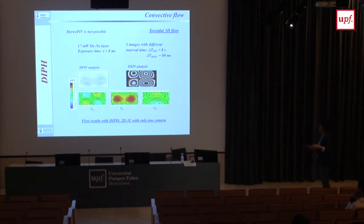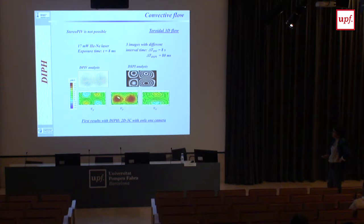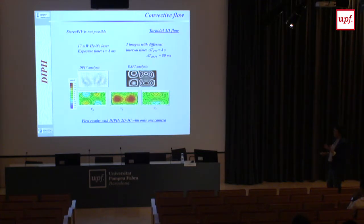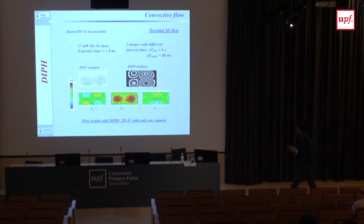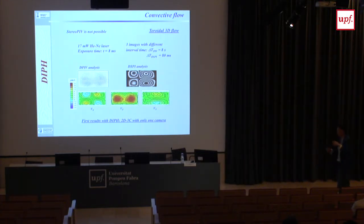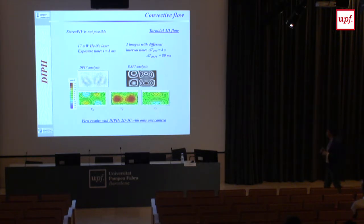This was the first time we showed that with DSPI or the image plane holography technique we could measure in-plane velocities. One component came from the phase image, and the out-of-plane velocity showed asymmetry because the sensitivity vector — the illumination direction — contributes a mixture of Vx and Vy components. This asymmetry is due to the out-of-plane velocity. That was the first time we used this technique to measure three components in a box only 25 × 12.5 mm — too small to do stereoscopy.